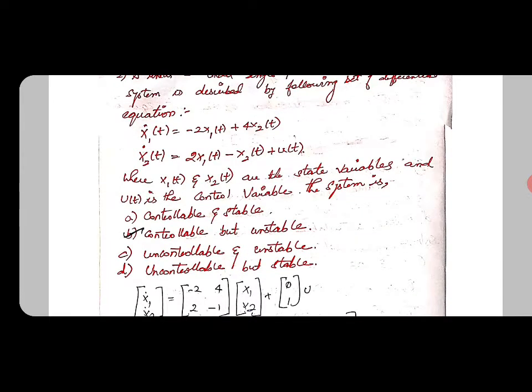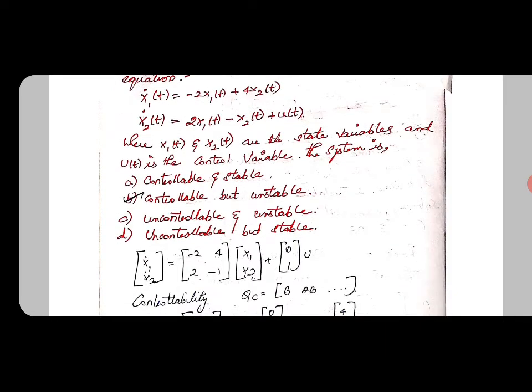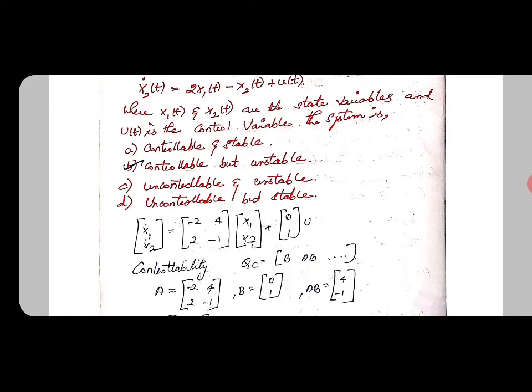The system is asking whether it is controllable or uncontrollable, and also asking the stability condition whether the system is stable or not. This is one of the GATE questions. We need to see clearly, first of all we can use the controllability condition.